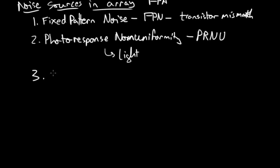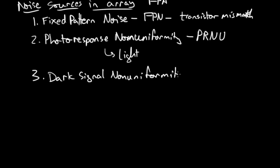The third category is the dark current version of photoresponse non-uniformity. It's usually called dark signal non-uniformity, abbreviated DSNU. Different pixels will have different dark currents for a given integration time. The sources of dark current are surface dark current and bulk dark current — just know that some pixels have different responses than others.